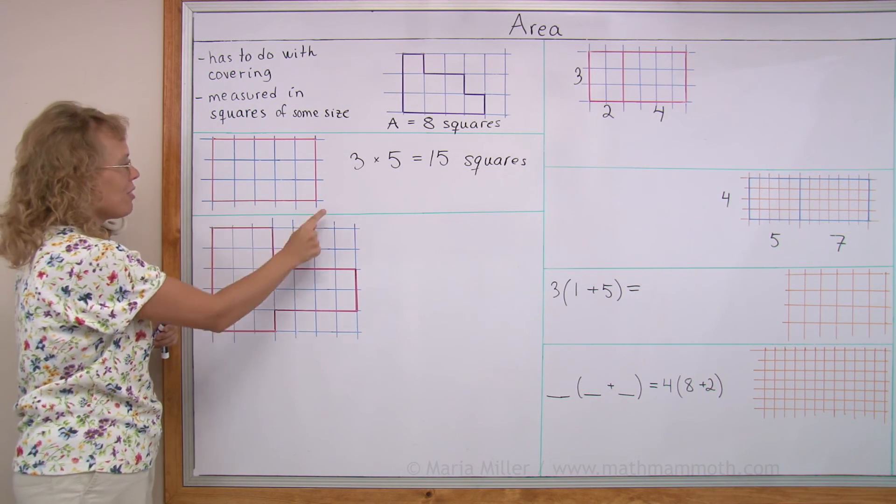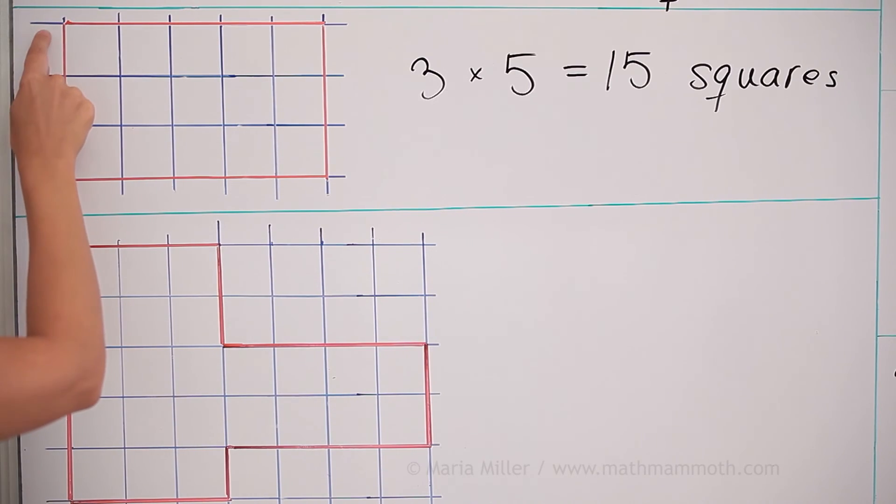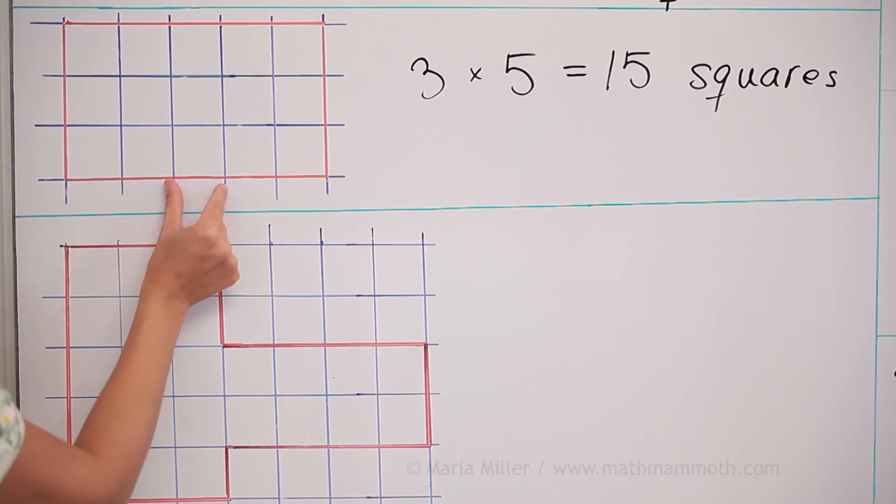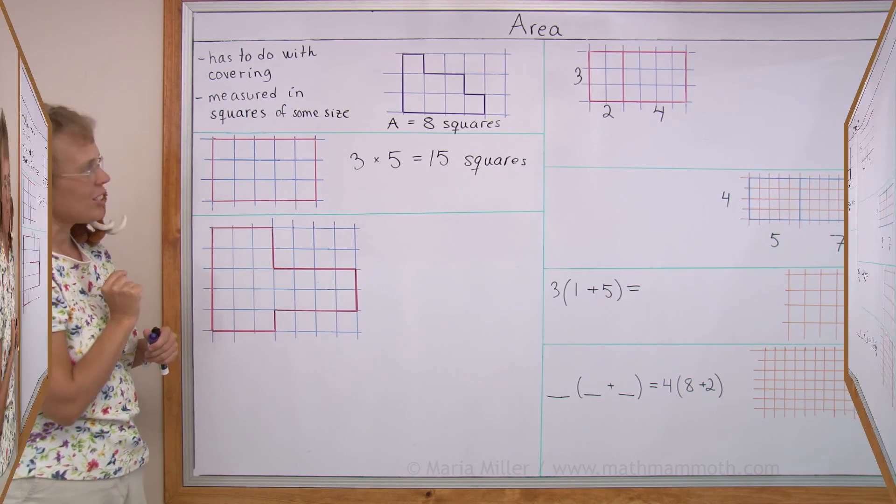And we get 3 times 5. Do not count these blue little lines here. Like 1, 2, 3, 4. Do not count those lines. You still need to count them as like a unit. Here's a unit, unit, unit. 3 units times unit, unit, unit, unit, unit. 5 units. Okay?